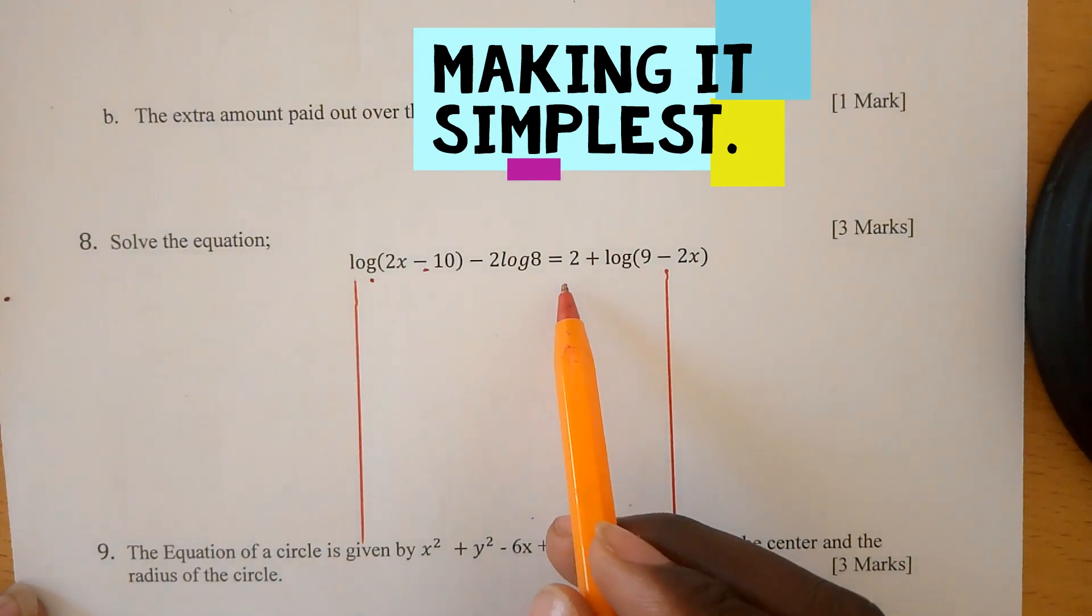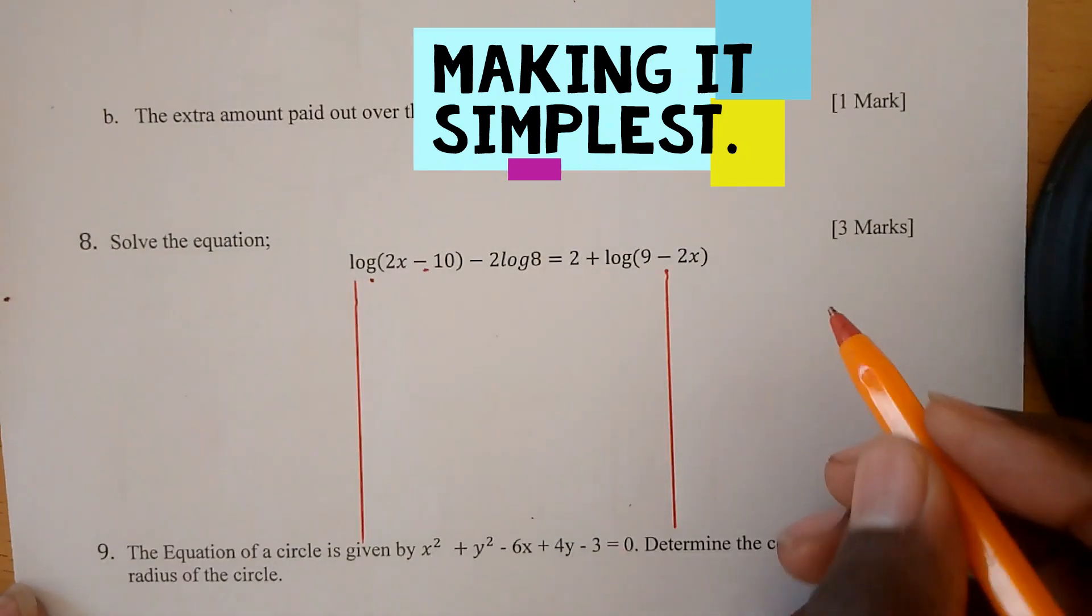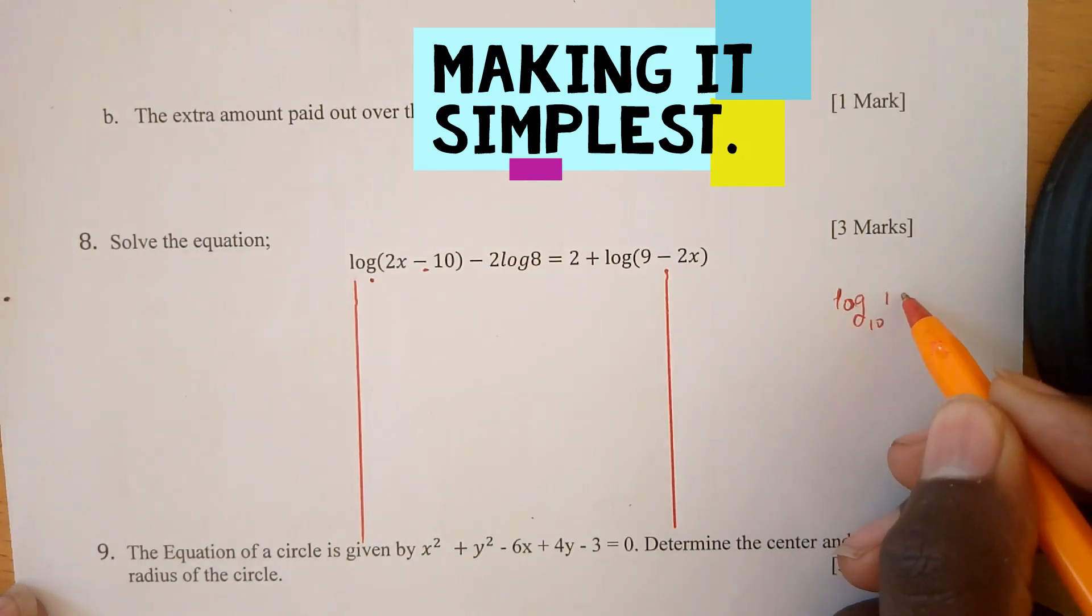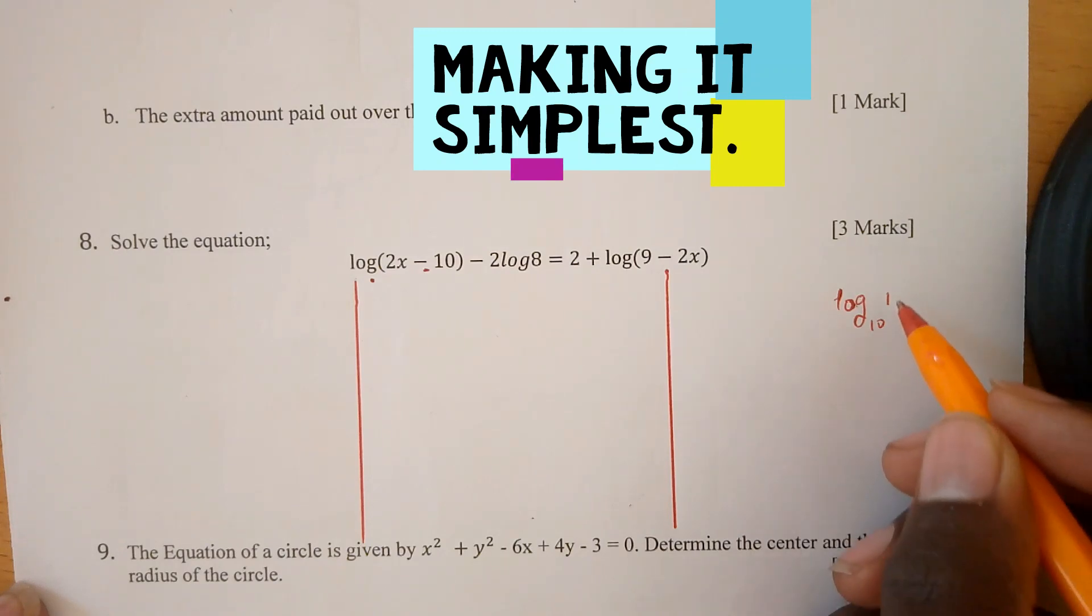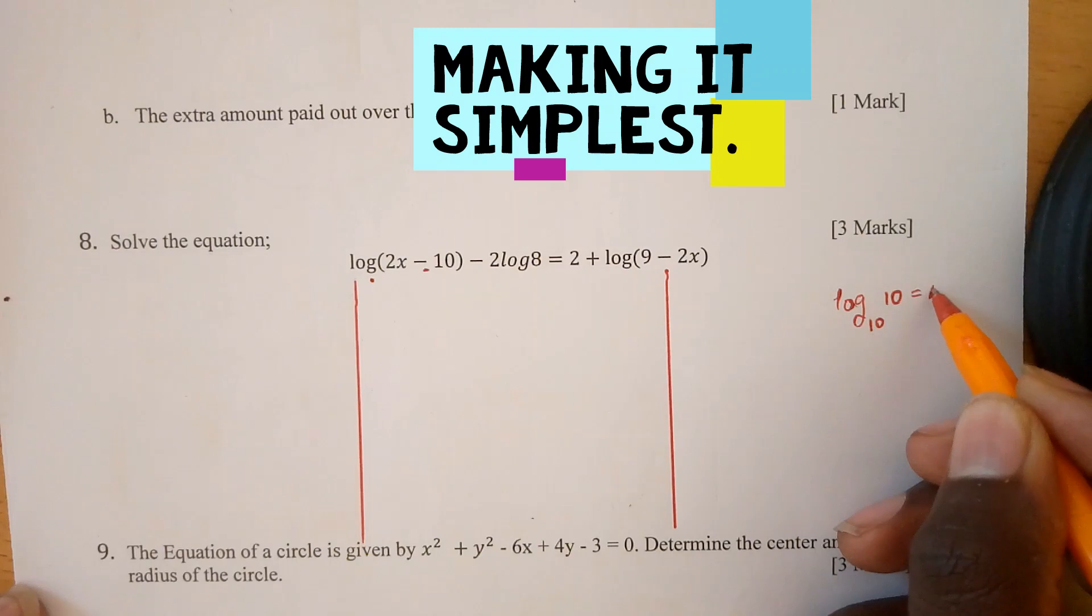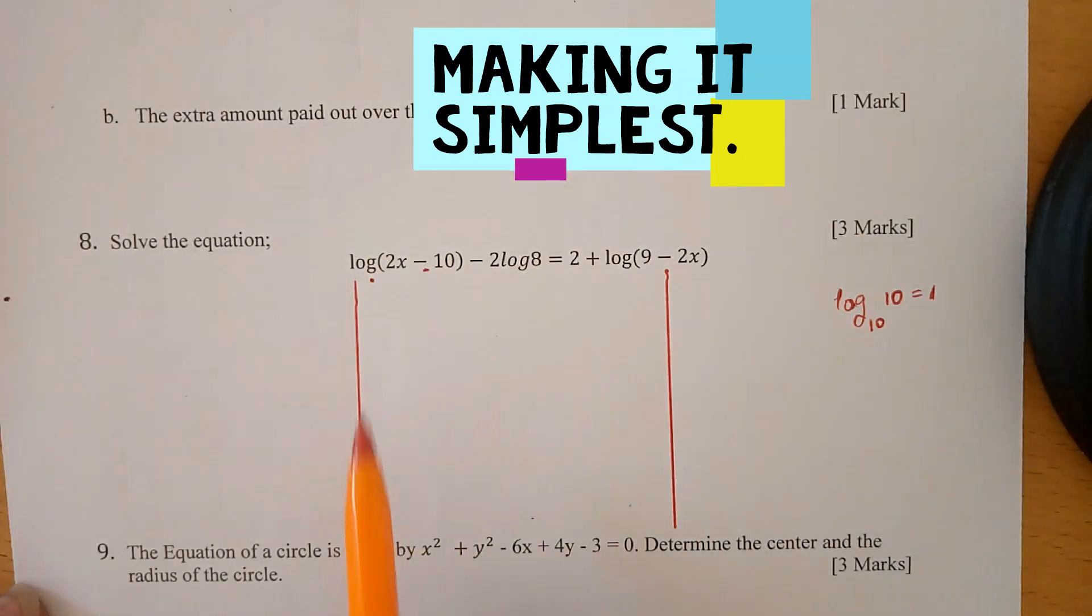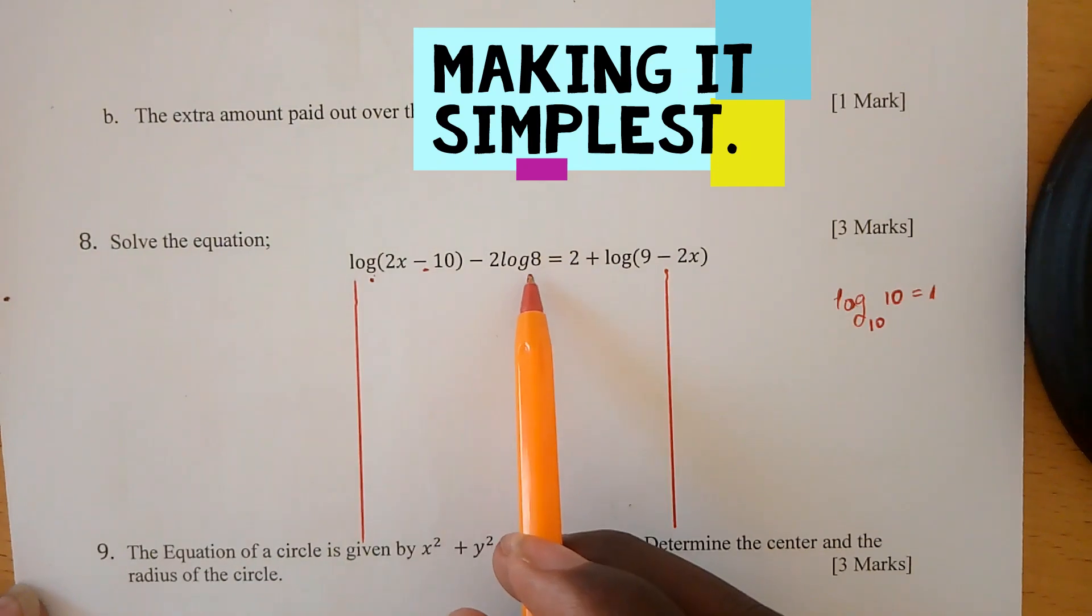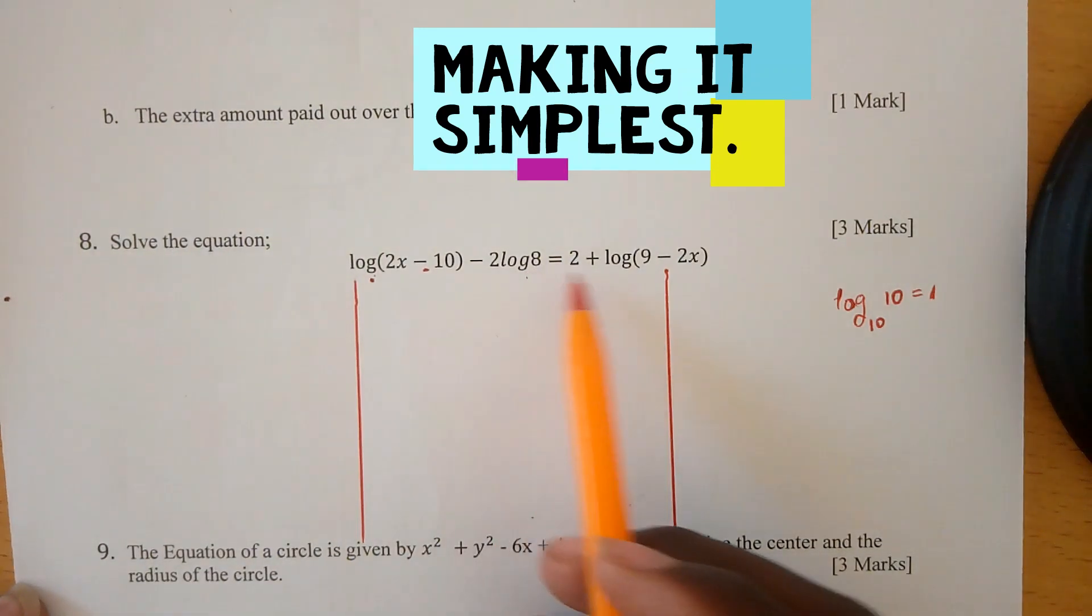For this 2, we know that log base 10 of 1 equals 1, and log base 10 of 100 equals 2. All these logs don't show bases, but they have a silent base of 10.